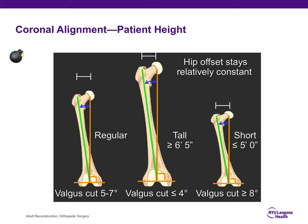An interesting question from past OITEs: how does patient height affect coronal alignment? Even though hip offset stays relatively constant, the valgus cut is affected. For a taller patient it will be less than five to seven degrees — closer to four degrees. For a shorter patient, it will be closer to eight degrees of valgus. This affects your valgus cut angle to achieve a neutral mechanical axis.